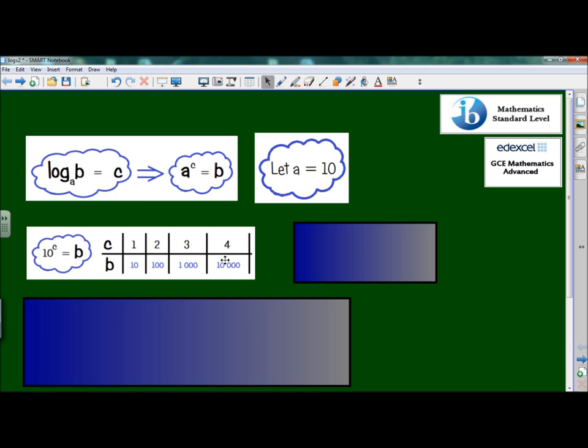So first of all, let's have a look at a table. We're really concerned with the right-hand side A to the power of C equals B. Well, we know that A is equal to 10. So we're saying that 10 to the power of C is equal to B. On the top, we've got all our values of C. And on the bottom, we've got the values of B that they give.